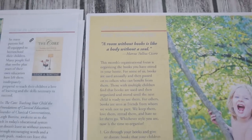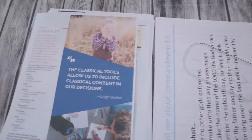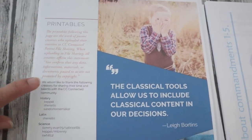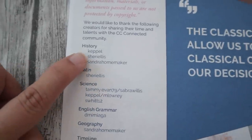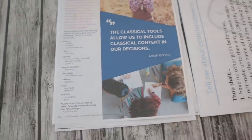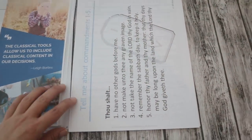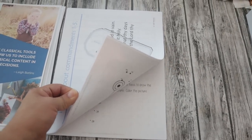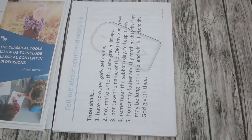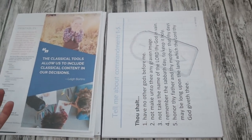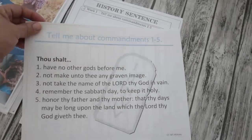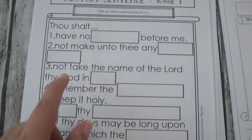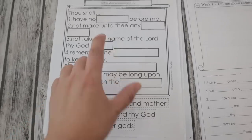There's also a 'getting organized' article for first quarter books. Now for the printables — these give credit to all the CC Connected users who contributed them. The first week covers learning about the first five commandments with a history sentence printable where kids can cut and paste, plus a picture prompt to draw Moses when God gave him the commandments.